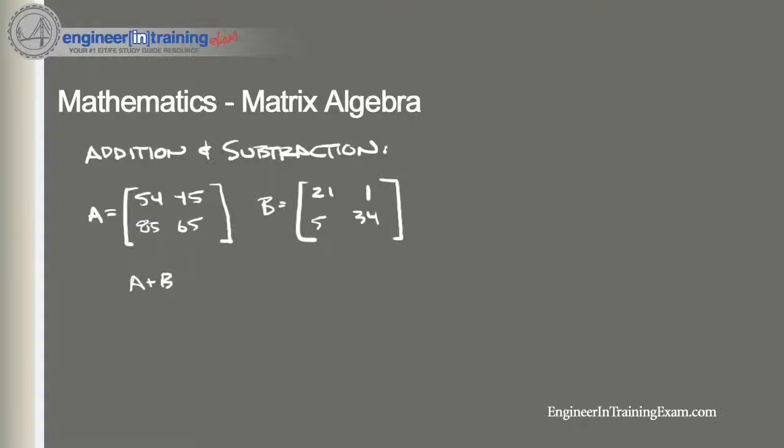All we need to do is add the corresponding elements. So we want to add 54 plus 21, which equals 75, and 45 plus 1, which is 46, 85 plus 5 is 90, and 65 plus 34 is 99. So that would be our new matrix, and we would call that C or any other letter except for A and B, since those are already defined.